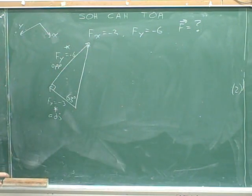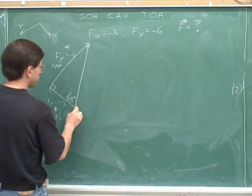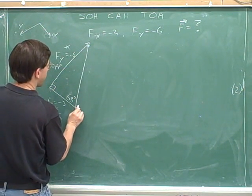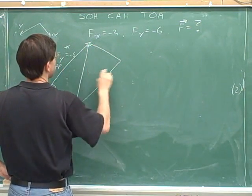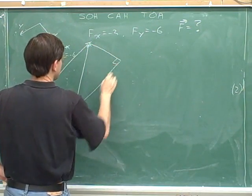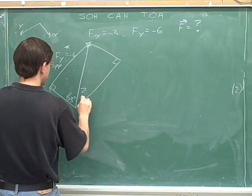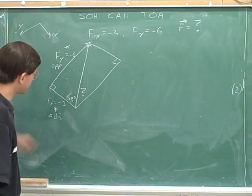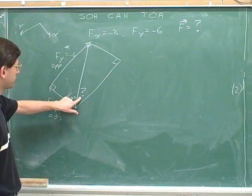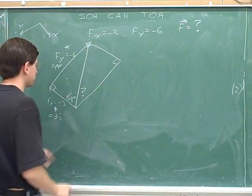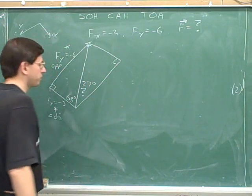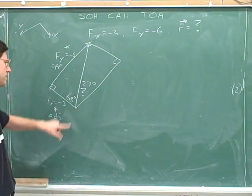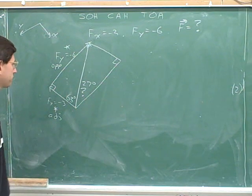If you wanted to, you could have drawn the y component first and then the x component. If you draw the y component first and then the x component, you get this right triangle and end up figuring out this angle. It's pretty clear that if you worked it out this way, the angle you would have gotten was 27 degrees. So if you got an angle of 27, that's fine as long as that was the angle you were focusing on.